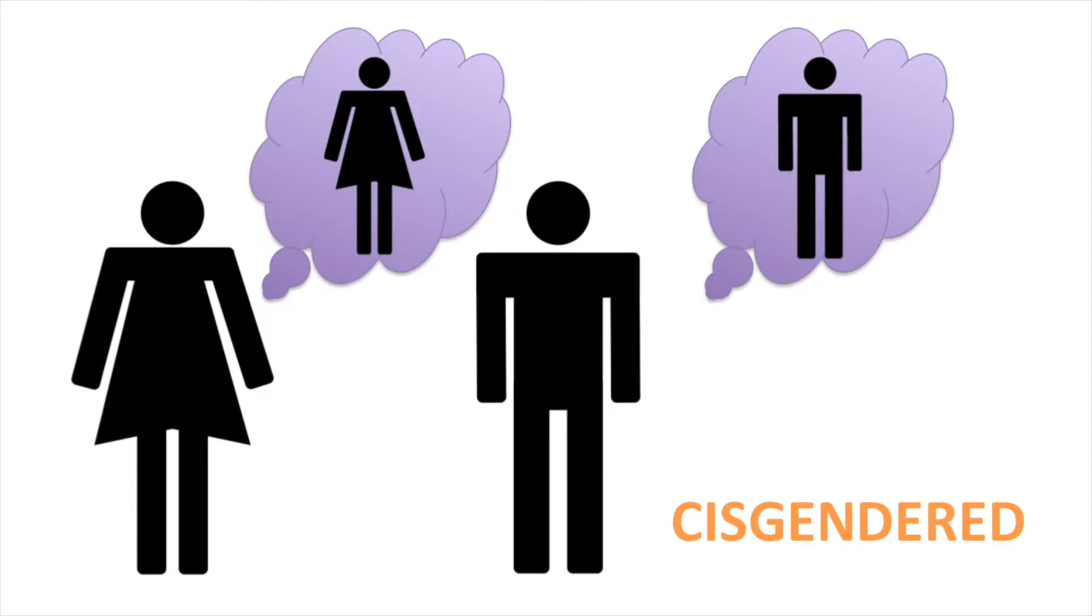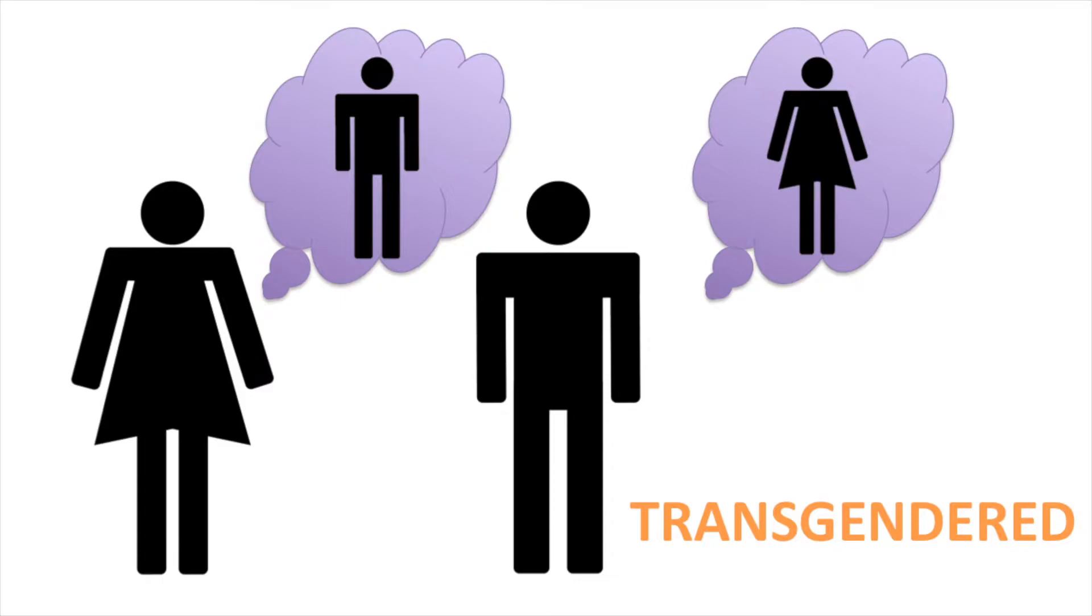Cisgender individuals are people whose gender matches their biological sex. Transgender individuals are people whose gender does not match their biological sex. We call biological males who identify as females trans females. We call biological females who identify as males trans males.